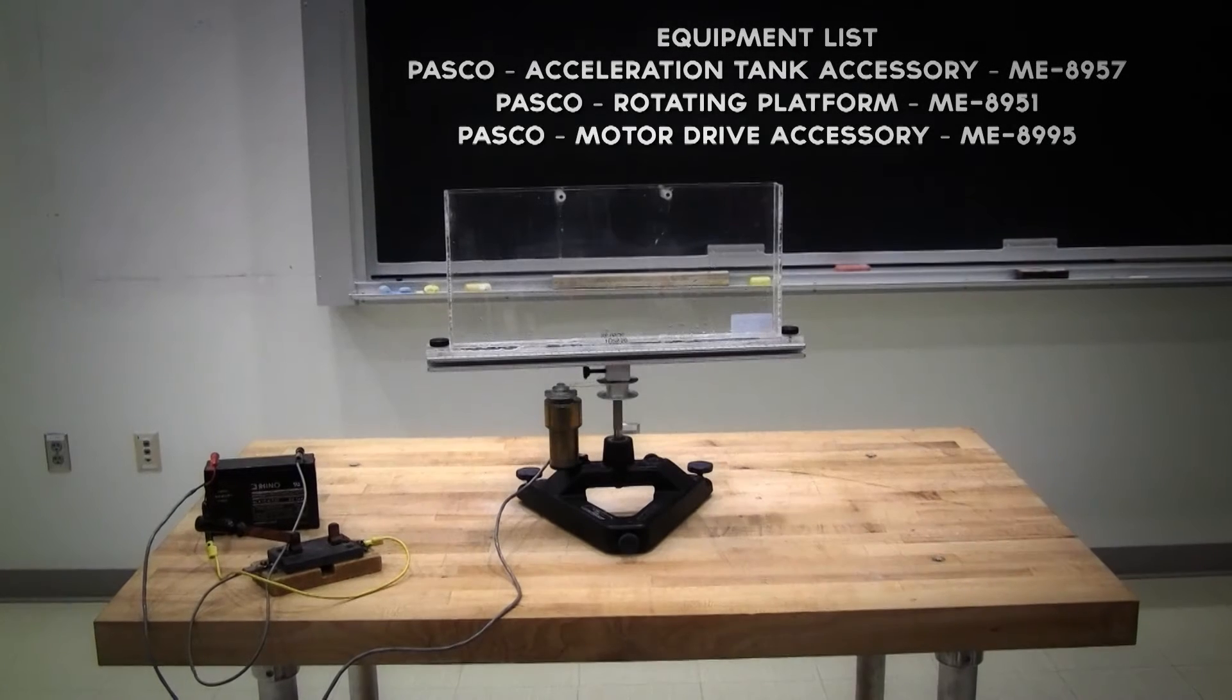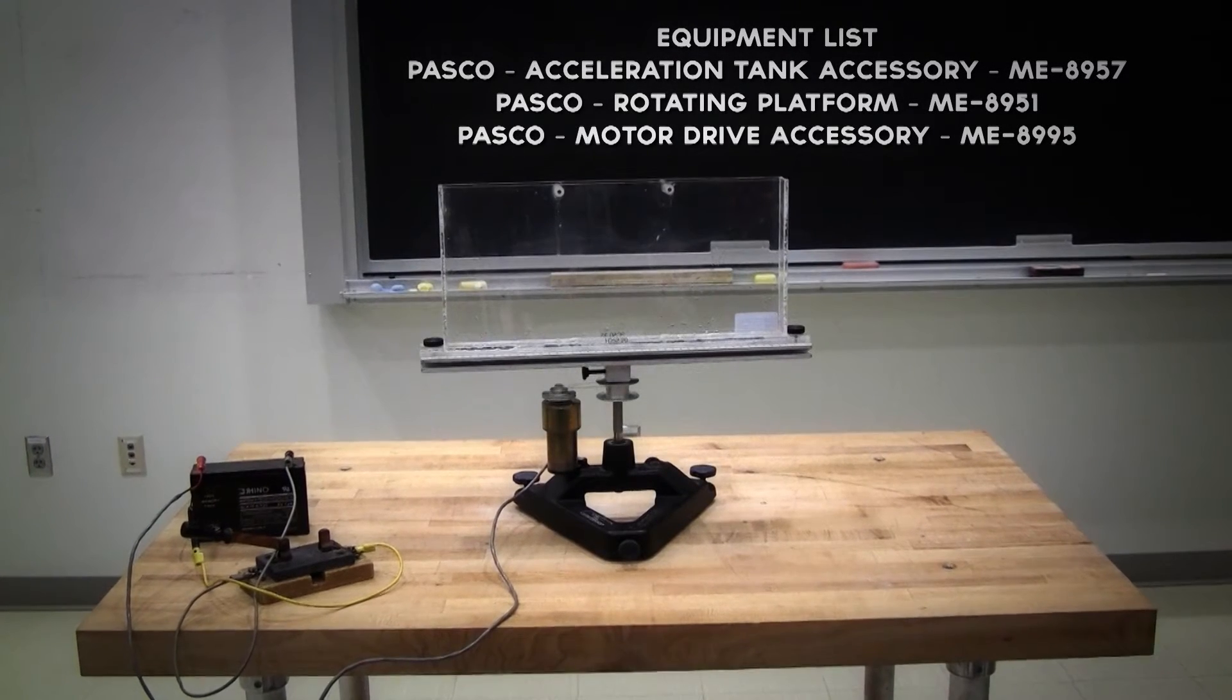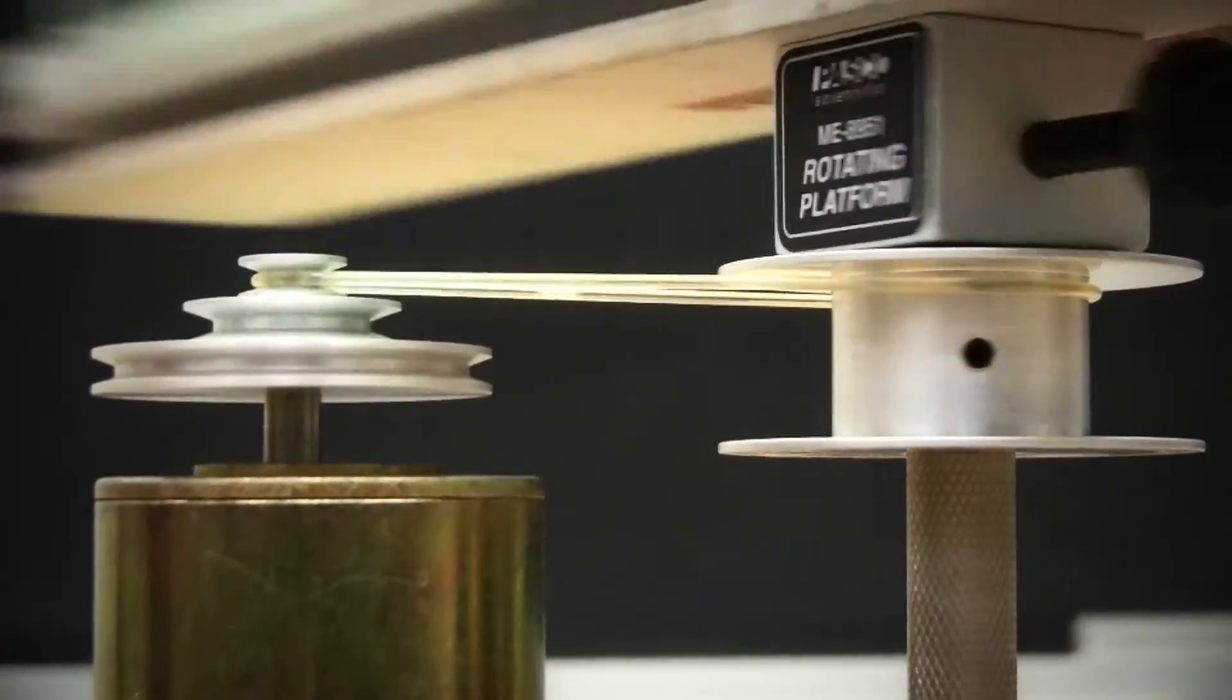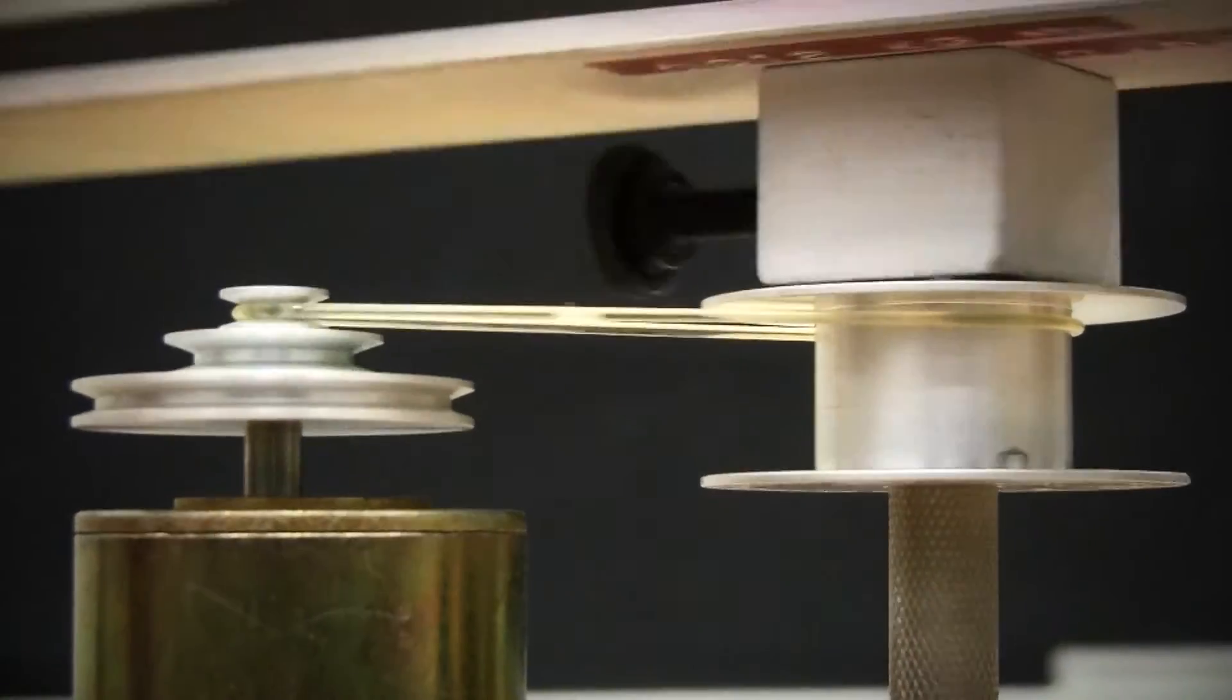The following demonstration is useful for conveying how spin casting works. It consists of a thin rectangular tank, think fish tank, that is mounted on an electric motor that will allow it to rotate.